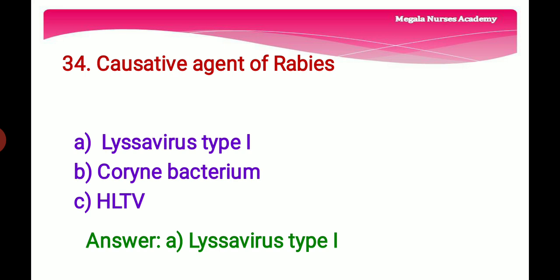Thirty-fourth question: The causative agent of rabies — Option A: Lyssavirus type 1, which causes rabies. Option B: Corynebacterium, which causes diphtheria. Option C: HTLV, human T-cell leukemia virus. The right answer is Option A, Lyssavirus type 1.